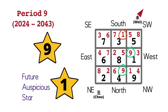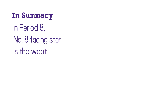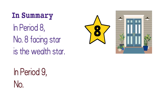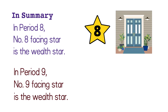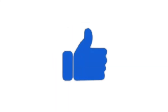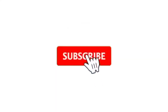Now we've learned how to improve our house's feng shui and what to do in Period 9. In summary: in Period 8, number 8 facing star is the wealth star, so we need to open the door in the direction of number 8. In Period 9, number 9 facing star becomes the wealth star, so we need to open the door in the direction of number 9. In this way, wealth can enter the house through the main door. If you like my videos, feel free to give a thumbs up and subscribe to my channel.